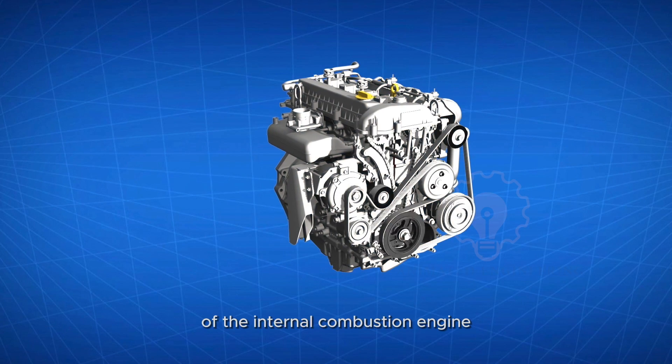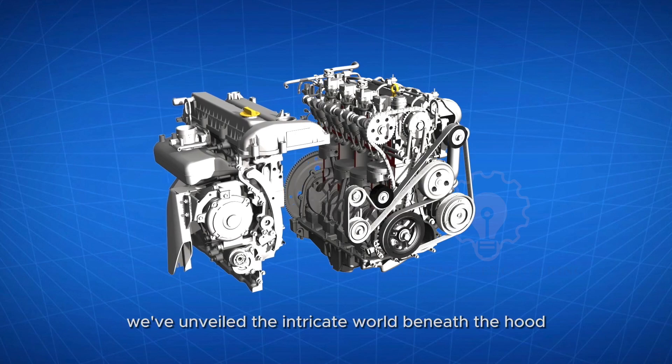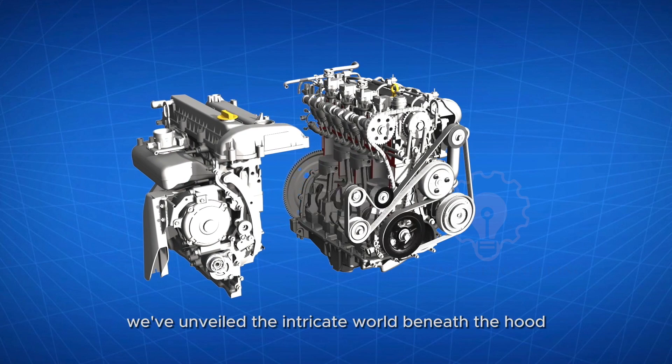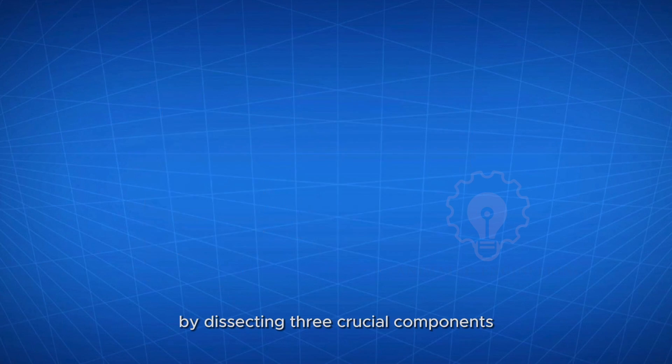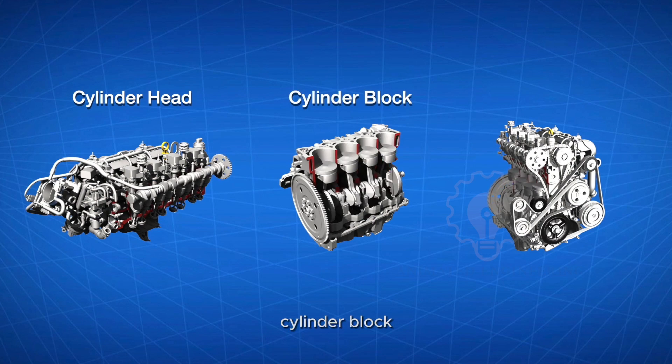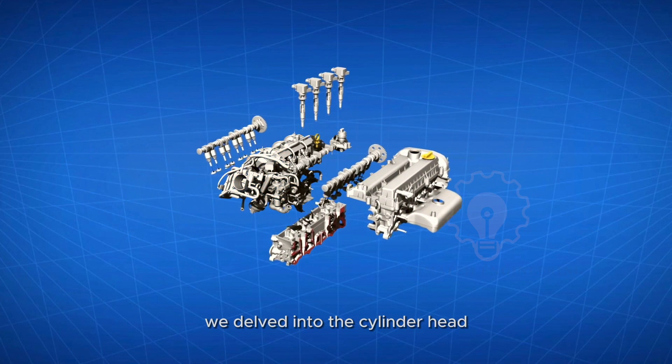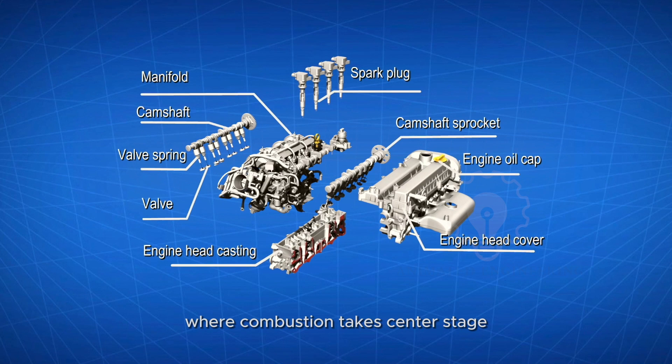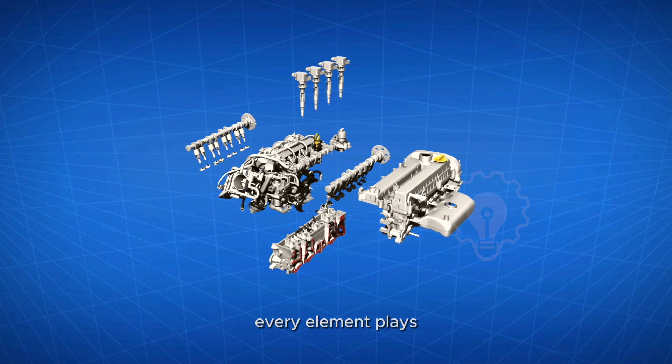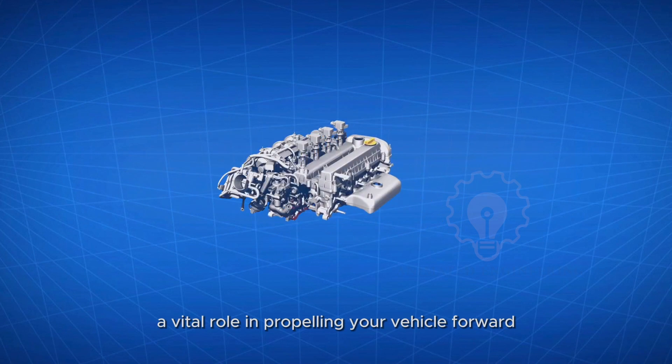As we conclude our exploration of the internal combustion engine, we've unveiled the intricate world beneath the hood by dissecting three crucial components: the cylinder head, cylinder block, and timing system. In the first part, we delved into the cylinder head, where combustion takes center stage. From the casting that forms its structure to the valves and spark plugs orchestrating the combustion dance, every element plays a vital role in propelling your vehicle forward.